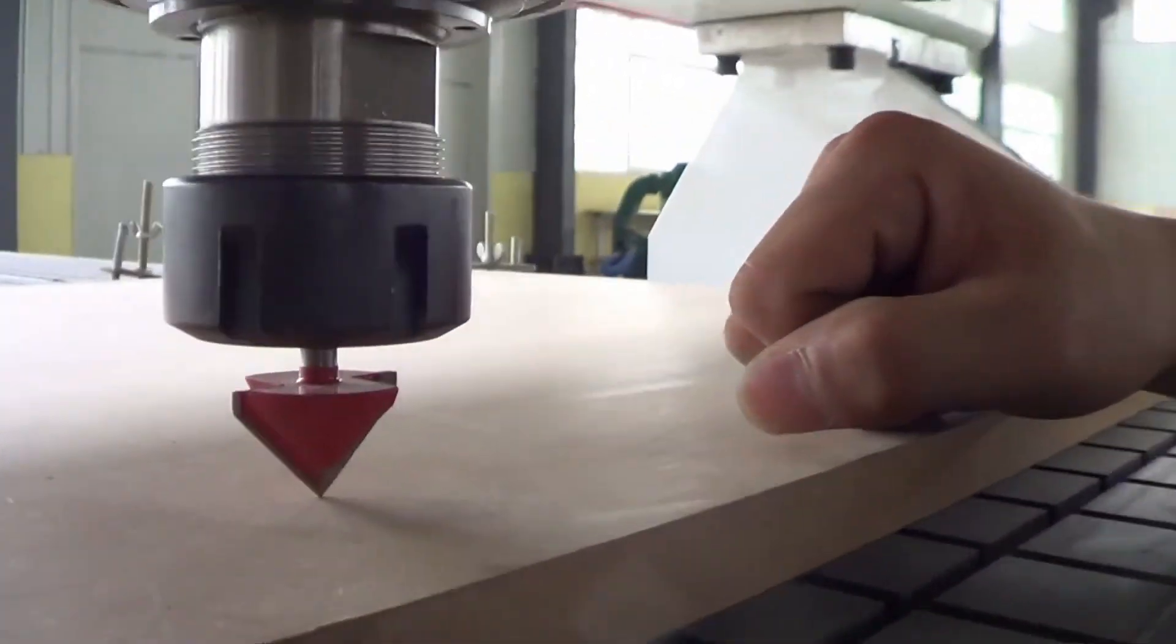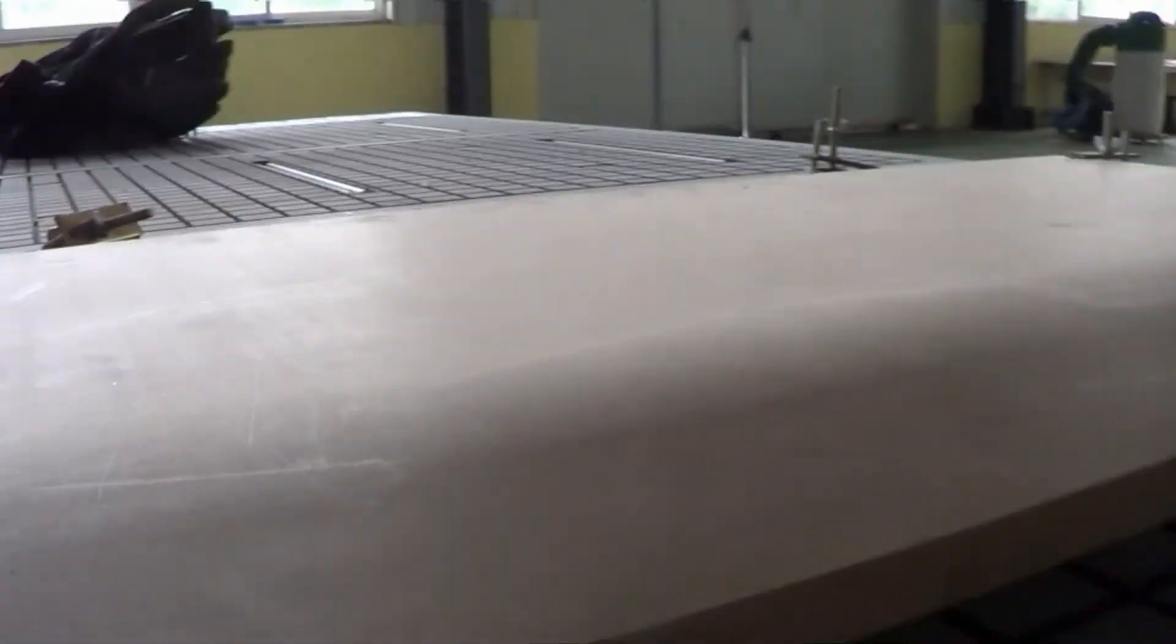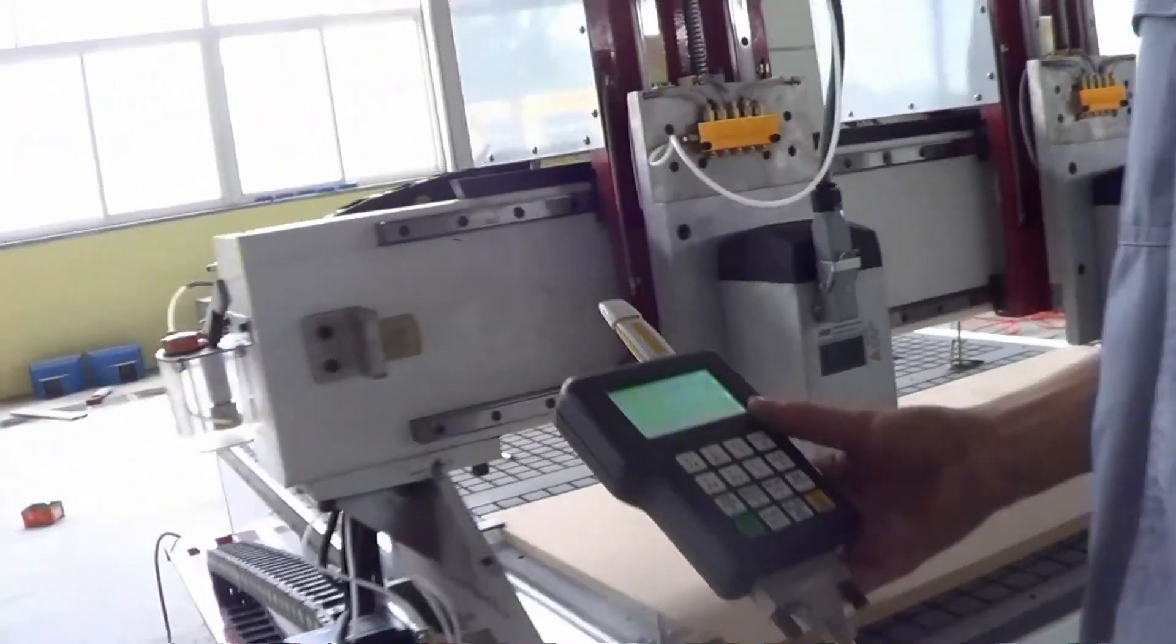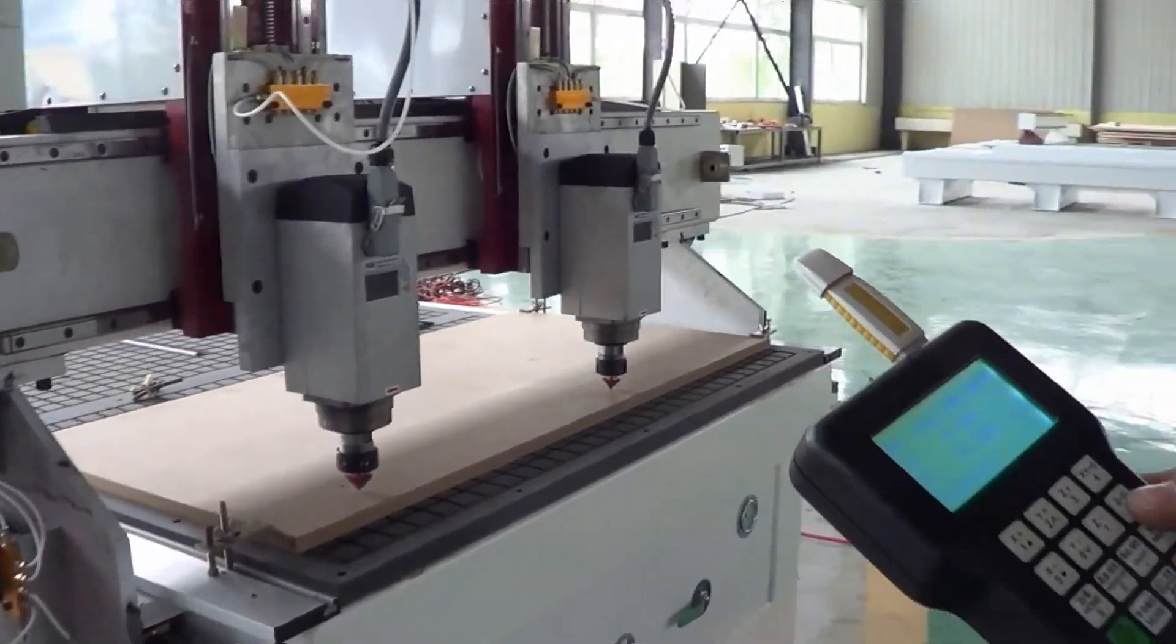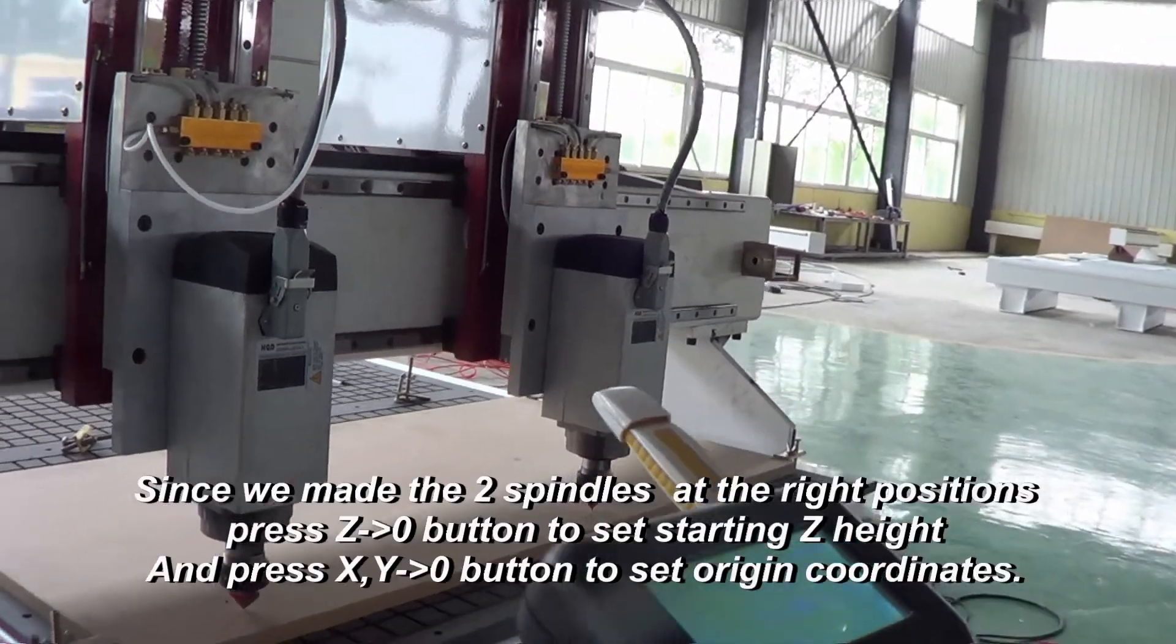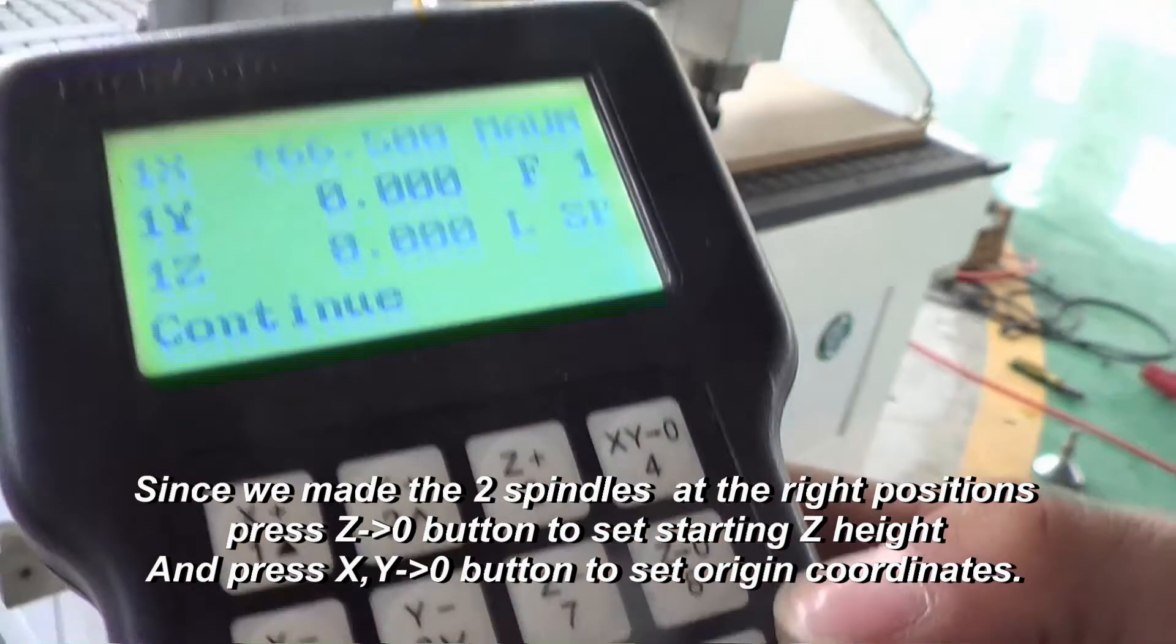So now we can see both spindle 2 and the spindle 1 are at the right position. Now we can set the Z origin level by pressing the Z to zero button.